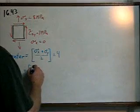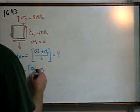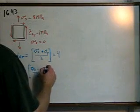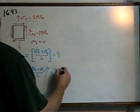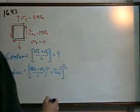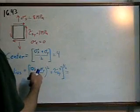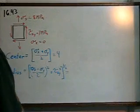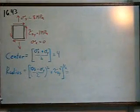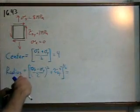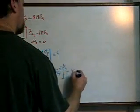The radius is the square root of the quantity (stress x minus stress y divided by 2) squared, plus the shear stress squared. Stress y divided by 2 gives 4, and the negative cancels with the square, so that's 16. Plus 7 squared is 49. 49 plus 16 is 65, and the square root of 65 is approximately 8.06.